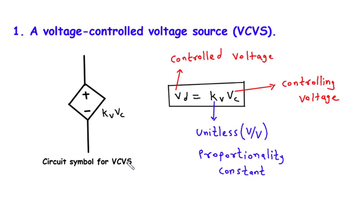Another application of the VCVS is in filters, where we can adjust the cutoff frequency based on the controlling voltage. This enables us to selectively pass or reject certain frequencies in a signal, contributing to various filtering techniques used in audio processing, communication systems, and more.